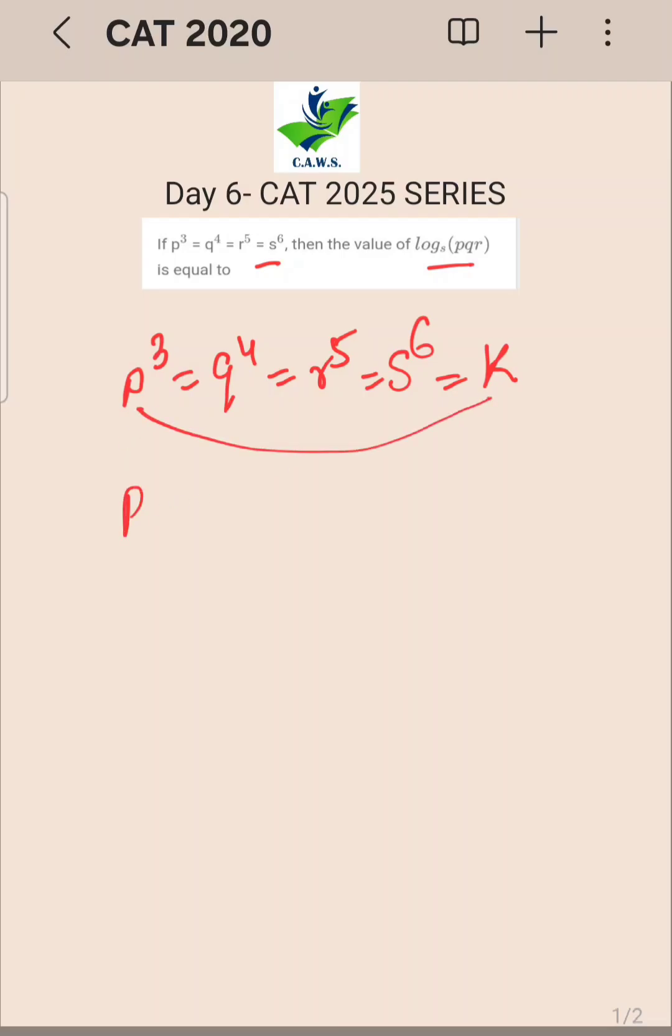So P cube is equal to K, so can I say P value will be K raise to 1 by 3? Q value will be K raise to 1 by 4. R will be K raise to 1 by 5 and S will be K raise to 1 by 6. Is this clear?